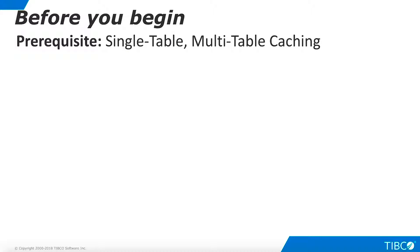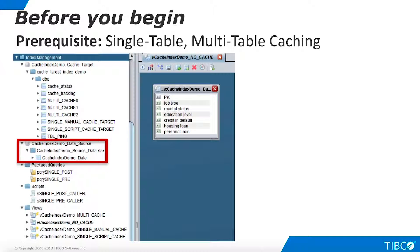In order to use this demo, you must have a working knowledge of single table and multi-table database caching. If you need a refresher, demoats on these topics are available. This demo requires significant setup. You can easily build the resources from scratch. For our physical data source, we use a table on a Microsoft SQL Server database. This table contains approximately 41,000 rows. Of course, you may use any data from any data source.